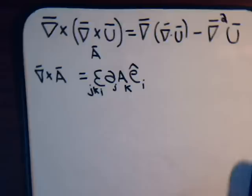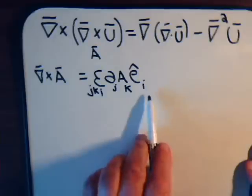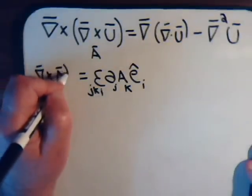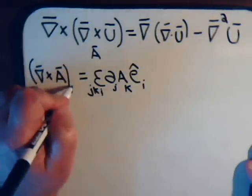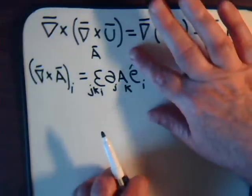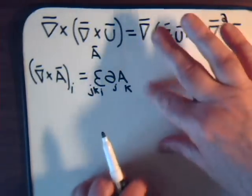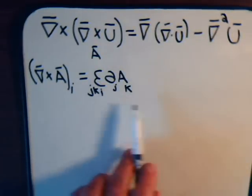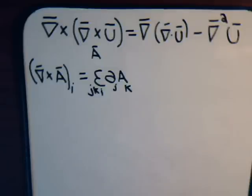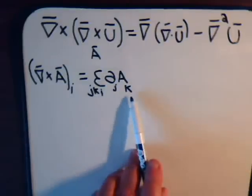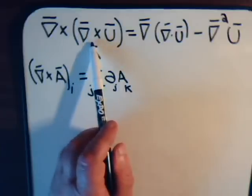From our previous videos, you know we like to work with our expression in component form. So this is ei, then the i-th component of this is just this without the ei. We've gone over that many times now in the previous videos. Now here we have a k-th component of vector a, but a itself is a cross product.